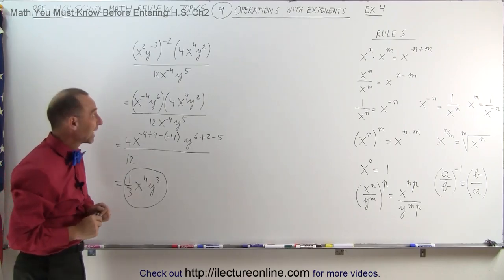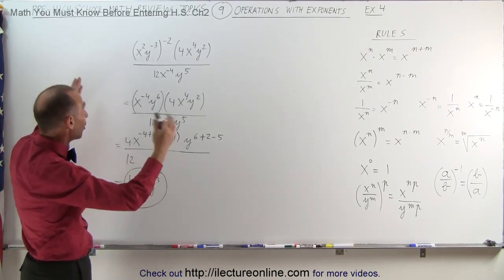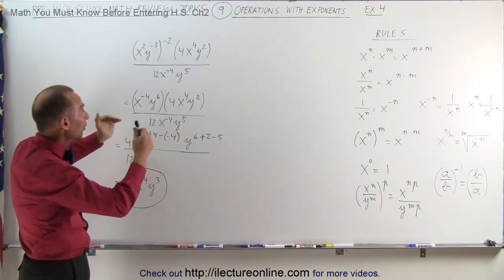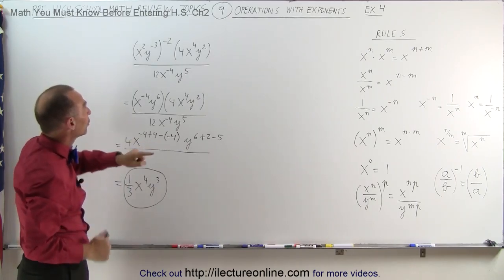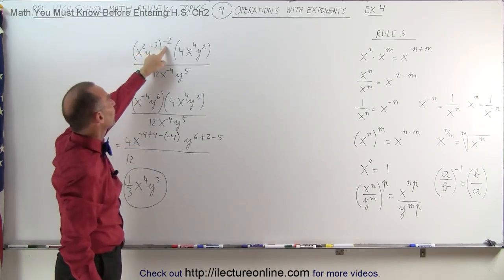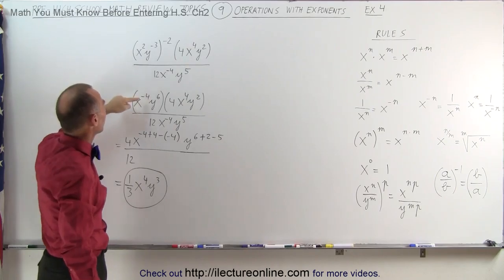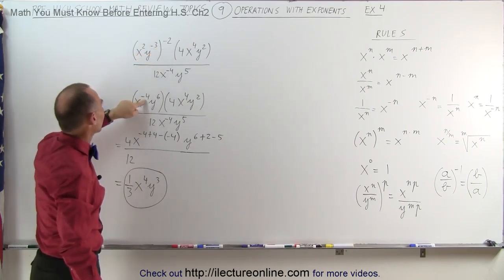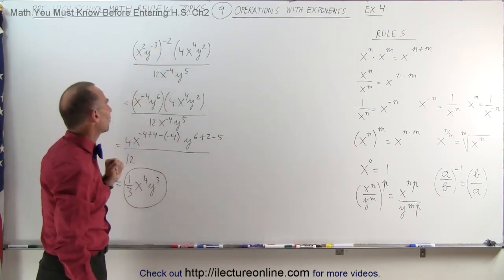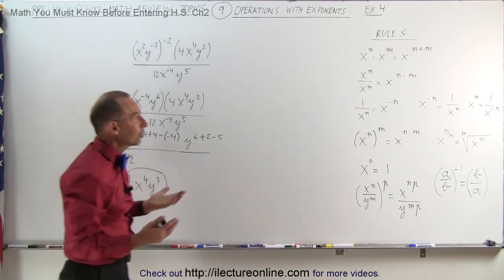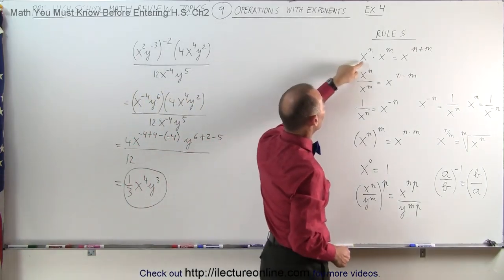So even though it looked really hard, when you follow one step at a time and follow all the rules, it's manageable. Here we have an exponent raised to an exponent. We simply multiply the exponents. 2 times negative 2 is negative 4. Negative 3 times negative 2 is positive 6. Then we use the rule where when we multiply, we add the exponents.